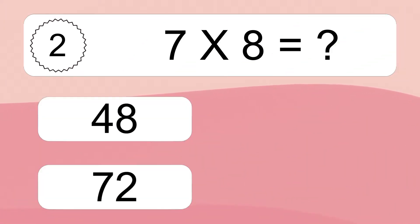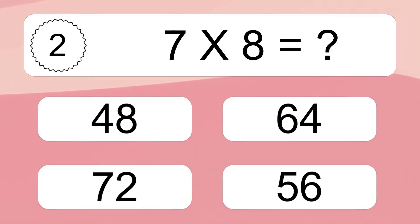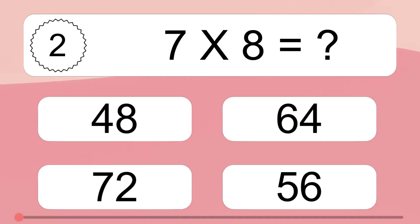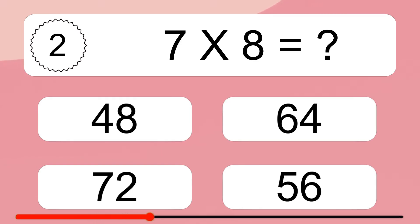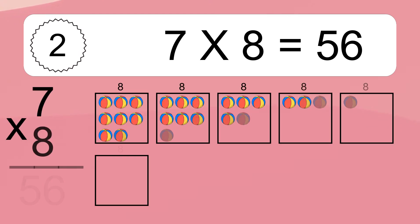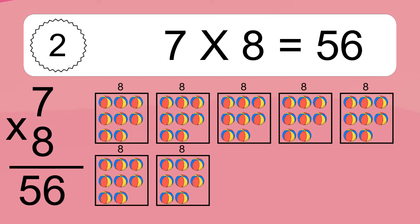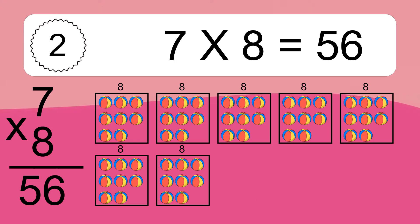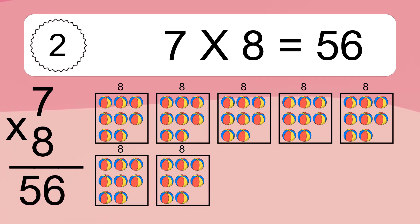Seven times eight equals what? Seven times eight equals 56. We have seven boxes, and each box has eight colorful balls inside. If you count all the balls in all the boxes together, you will have seven times eight balls.